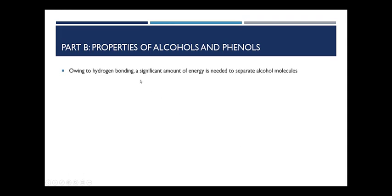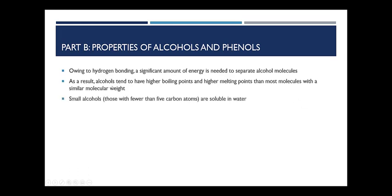We need quite a bit of energy to separate alcohol molecules because of the hydrogen bonding which occurs between them. So we find that alcohols tend to have rather high boiling points and high melting points compared to molecules with similar molecular weights, say alkanes or ethers. We generally find that small alcohols, those with fewer than five carbons, are soluble in water, although the more carbon atoms we add, the less soluble they tend to be.